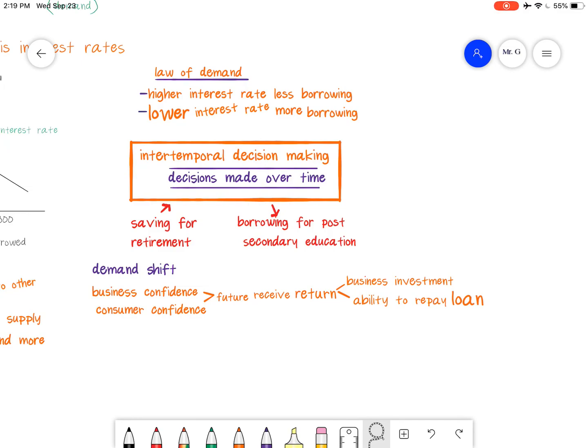We talk about intertemporal decision making, decisions made over time. People don't make decisions just for now, they make decisions over time. If you think about it, what do people do? They save for retirement. They're like, well, I'm going to retire by 65, so I need to have this amount of money saved up in order to survive off of that money.